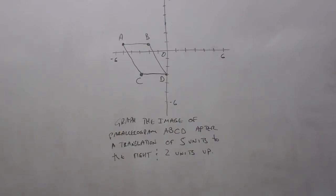We'll talk about a couple other properties here, but first let's discuss what we want you to do when we ask you to translate a figure. If you look at the problem here, we ask you to graph the image of parallelogram ABCD after a translation of five units to the right and two units up.